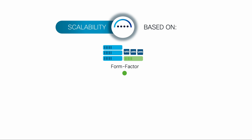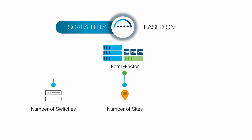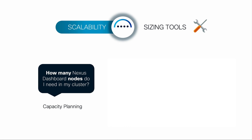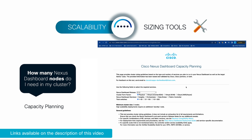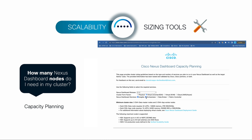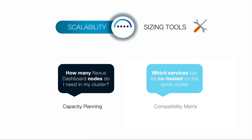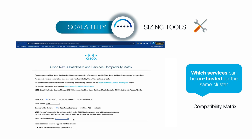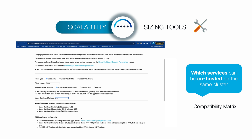Nexus Dashboard scales out based on the size, number of sites, and the operational services used to manage them. With this in mind, it is important to design your environment based on your requirements, and there are two great tools that should be your starting point. One: Nexus Dashboard Capacity Planning, which helps you understand how many nodes a cluster needs based on your fabric size, form factor, and functions needed. And two: the Nexus Dashboard services compatibility matrix, which tells you which services can coexist on the same cluster and any limitations you may need to consider.